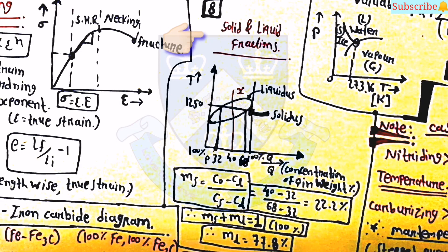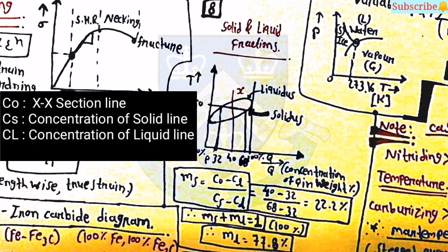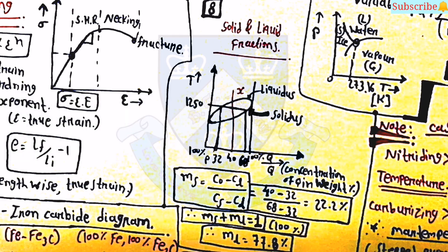The next topic is solid and liquid fraction. The diagram is important here, and the equation is: Ms equals (C0 minus CL) divided by (CS minus CL). You can take the values from the diagram. Similarly, you can find ML from the equation Ms plus ML equals 1, where Ms is the mass fraction of solid and ML is the mass fraction of liquid.